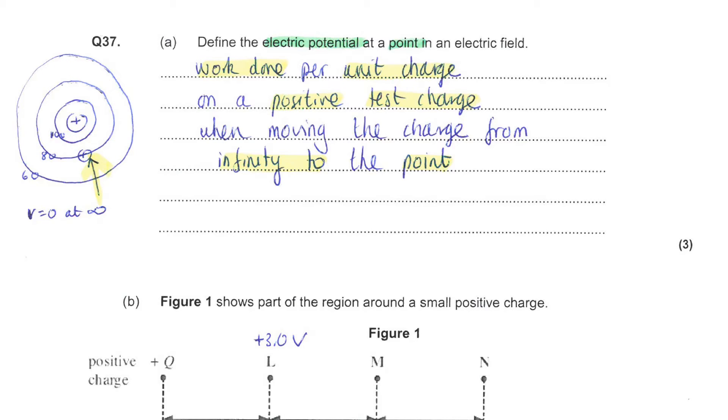So if we imagine a positive charge and we consider the potential at different positions around that charge, I've drawn you some equipotential lines here. Now, if you consider your positive test charge and think of work being done, moving that charge from infinity to the point, then you would be moving in the direction of this arrow here.